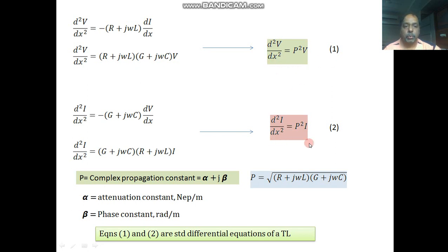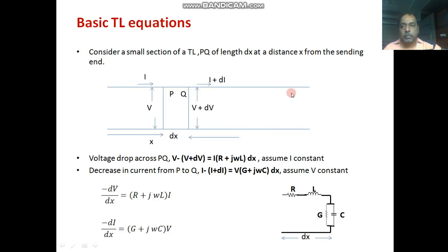Equation one and equation two are standard differential equations of a transmission line. These are second-order differential equations known as transmission line differential equations. To prove this, we take a small section of transmission line whose length is dx. This is the transmission line — this is conductor one, this is conductor two. At a distance x from the source, we take differential length dx.